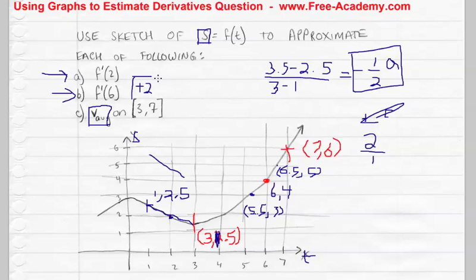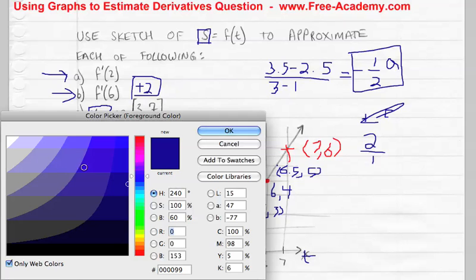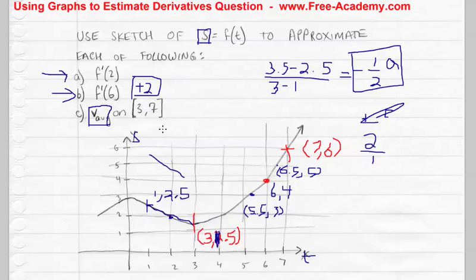Again, these are approximations. Let me change my color here for the final problem. The last one is going to ask for V average on 3 to 7. I already took the liberty of writing 3 and 7, and there are different points there.